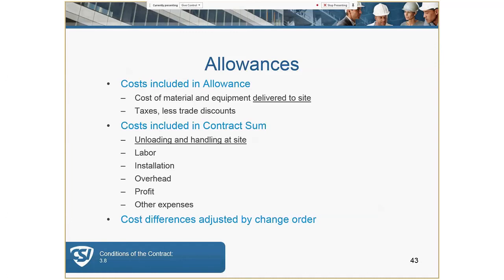Allowances might be used for materials not necessarily selected at the time contract documents are issued for bidding — for example, carpet or AV equipment. Allowances need to cover the entire cost of work: labor, material, delivery costs, taxes, etc., and are usually charged on a unit cost basis. Any balance within the allowance not billed is credited back in the form of a change order, including the GC's overhead and general condition costs.